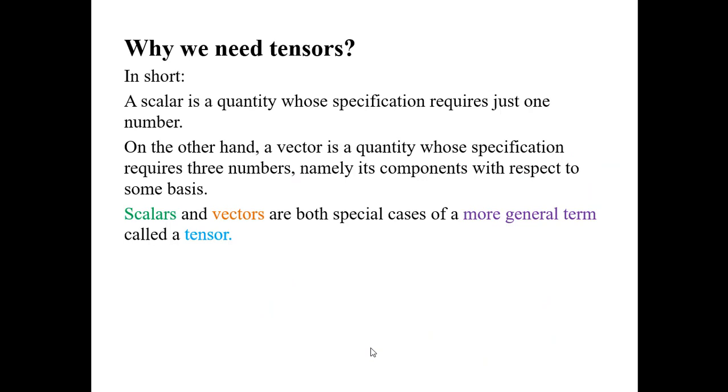In short, a scalar is a quantity whose specification requires just one number. On the other hand, a vector is a quantity whose specification requires three numbers, namely its components with respect to some bases. And then there is a generalization of these both concepts. That is, scalars and vectors are both special cases of a more general term called a tensor. Some physical quantities you can represent from scalars, some you can represent from vectors, but there are some quantities which need a more general term which is called a tensor.